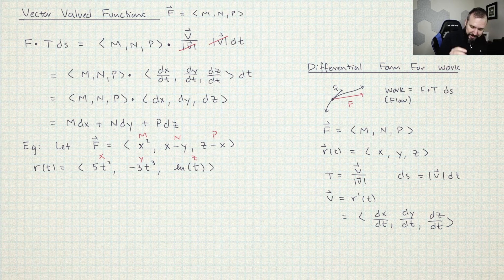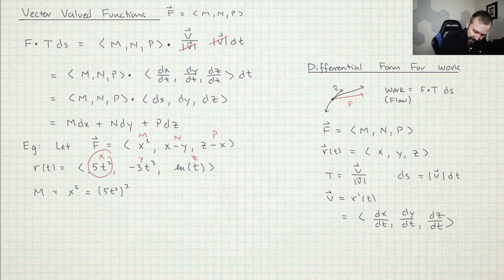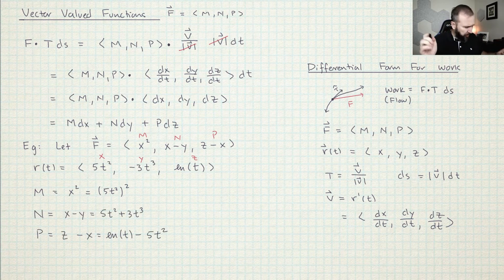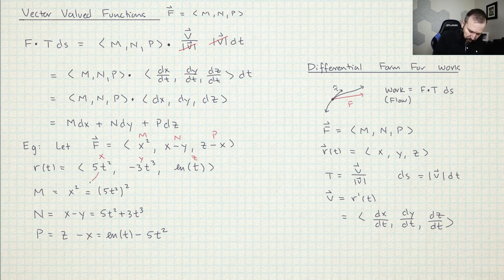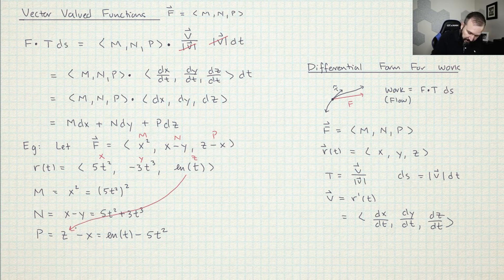What I'm trying to do is compute M DX. In this problem, M is equal to X squared and X is equal to 5T squared, so M equals (5T squared) squared. All I'm doing is taking X and plugging it in where X goes in the M formula. For N, which is X minus Y, I take the X coordinate and plug it in for X, and take the Y coordinate and plug it in for Y. And P is Z minus X, so I plug in Z where Z goes and X where X goes.